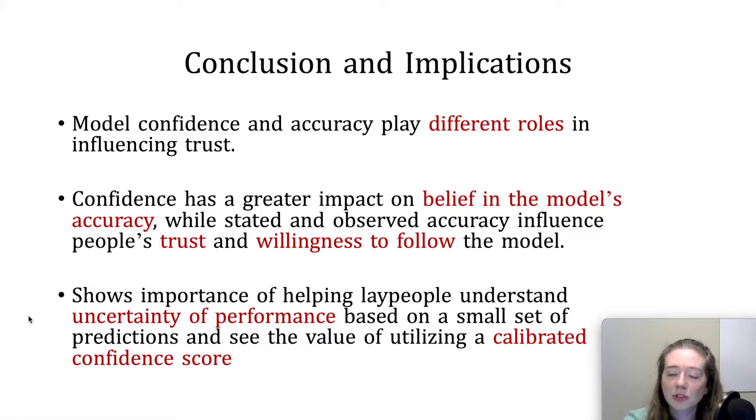These findings indicate the potential need of helping laypeople better understand the uncertainty inherent in performance calculations and calibration estimation based on a small set of predictions, such as was the case with observed accuracy in our experiment. It is critical for people to see the value of continued use of a calibrated confidence score to adjust their trust in a machine learning model, even after observing a very high or very low accuracy of the model in practice.